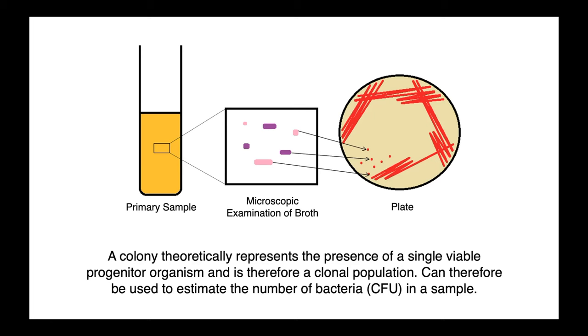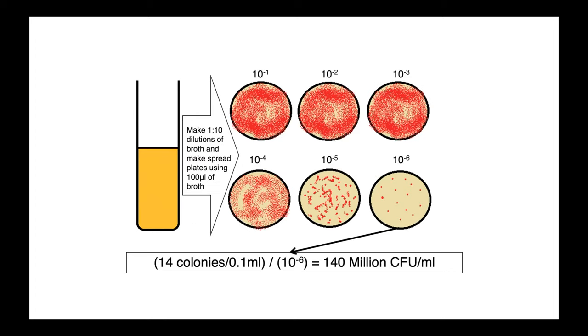By understanding the concept of CFUs, we can also estimate the initial concentration of bacteria in our primary sample. So if we look at our broth suspension of bacteria, we can make dilutions of that. So a 1 in 10 dilution series, such that the number of bacteria in each dilution is lower and lower and lower.